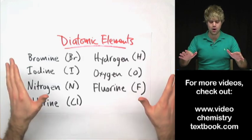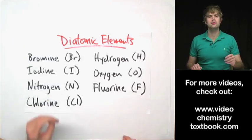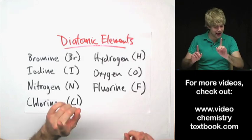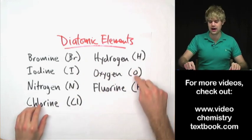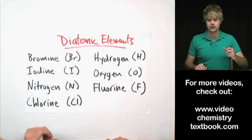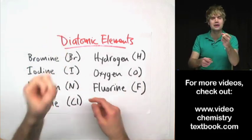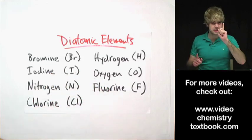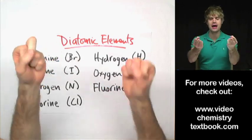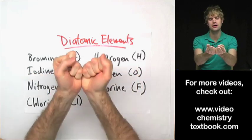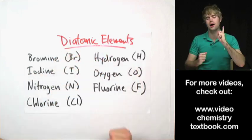What makes the diatomic elements special is that we never find a single atom, just one atom, of any of these guys on its own. So you never find just an oxygen atom hanging out or a nitrogen atom or an iodine atom. Instead, these atoms always pair up. You always find two of them together connected together forming a molecule.